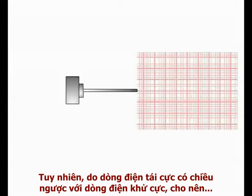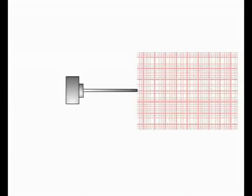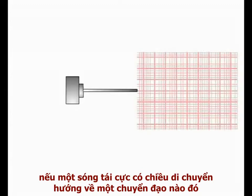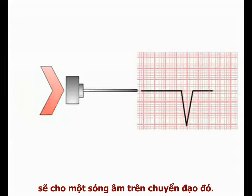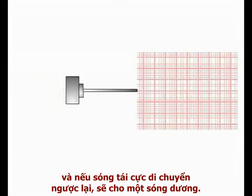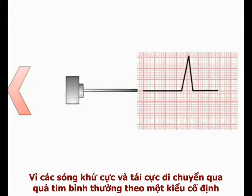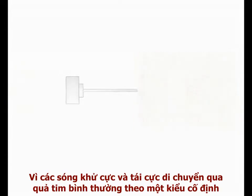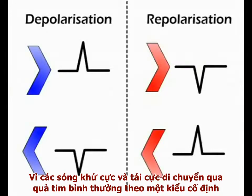In contrast, repolarizing current has the opposite polarity to depolarizing current. Therefore, repolarizing current moving towards a lead produces a negative deflection on the paper, while repolarizing current moving away from the lead produces a positive deflection.